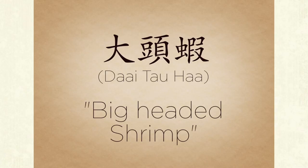Dai tau ha, big headed shrimp, means an absent-minded person. You're not stupid like an airhead, but you are forgetful.